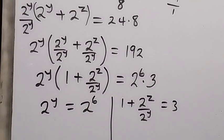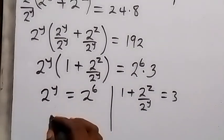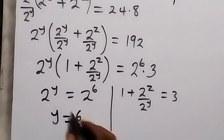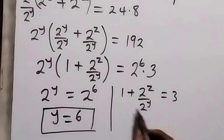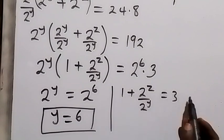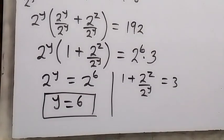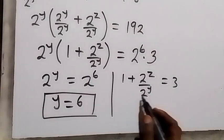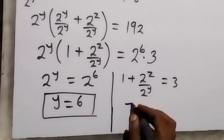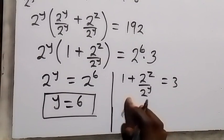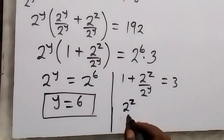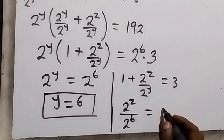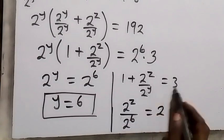From here y equals 6. Taking 1 to this side, we get 3 minus 1, which is 2. With y equal to 6, we have 2 raised to power z divided by 2 raised to power 6, equal to 2.